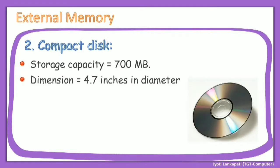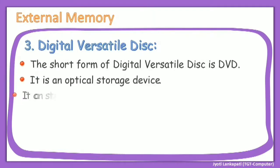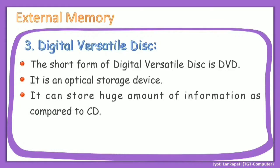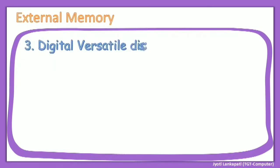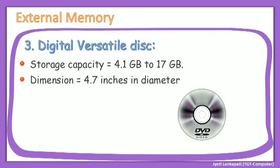Now let's see the third one: digital versatile disk, or DVD. It is also an optical storage device and can store a huge amount of information compared to a CD. The storage capacity of a DVD is 4.1 GB to 17 GB, and the dimension is the same as a CD — 4.7 inches in diameter, as shown in the figure.